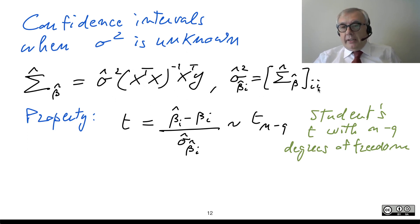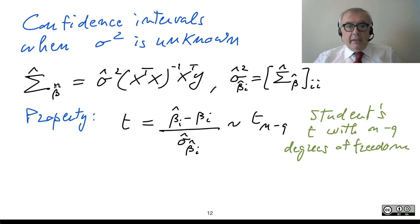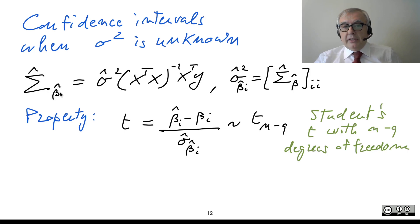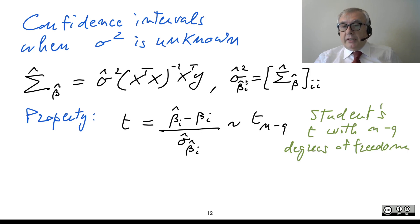And so we obtain sigma-hat-beta-hat. Here we have two hats: one because this is the variance matrix of the estimated parameters, and now it is also an estimate of that variance matrix. Again, we consider the values on the main diagonal — these are estimates of the variances of the single estimated parameters beta-hat-i.